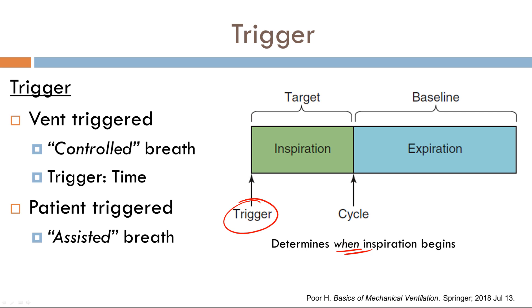In an assisted breath, the trigger variable is either pressure or flow. What happens is the patient triggers a breath themselves, which changes either the pressure or the flow in the circuitry, and as a result, that triggers a breath. It's up to you, the operator, to decide whether the trigger variable is pressure or flow for assisted breaths. However, conventionally, the majority of the time, the trigger variable is flow.